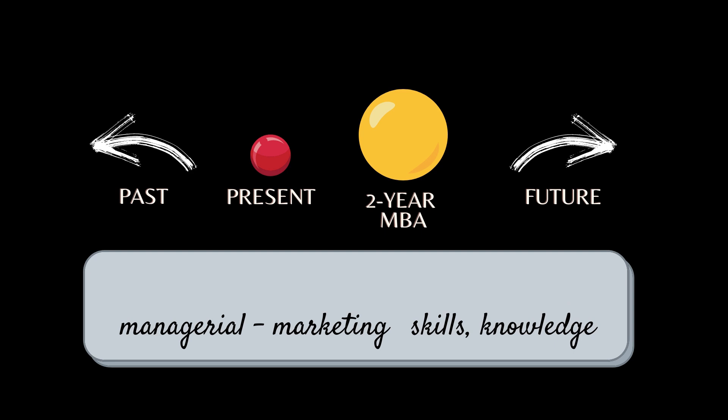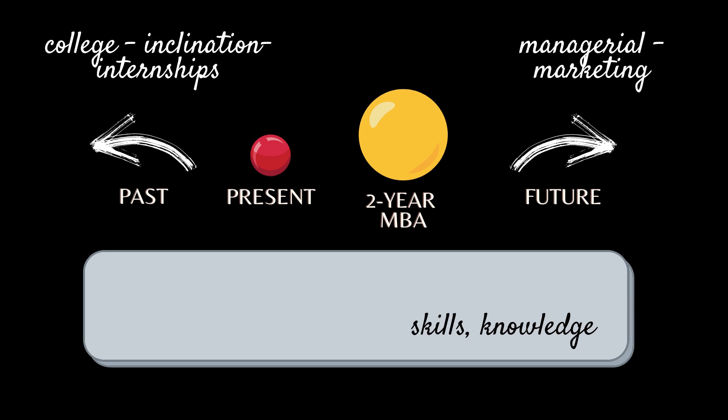Now, in this example, the pursuing of marketing internships and realizing that my inclination lies in the past. The realization that I would want to do a managerial role in the marketing function lies in my future and the equipping of marketing skills and expertise lies in that two-year MBA degree. So this is how it fits in this model.